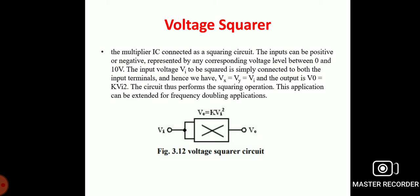For the voltage squarer application, the multiplier IC is connected as a squaring circuit. The input can be positive or negative, with corresponding voltage levels between zero and 10 volts. The input voltage to be squared is simply connected to both input terminals, so Vx = Vy = Vi, and the output is V-naught = k·Vi². The circuit thus performs the squaring operation.